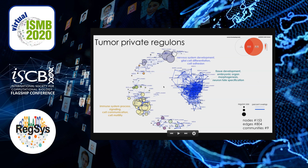We know these regulons work together because they are highly correlated at the activity level. However, they achieve their functions either by engaging similar downstream targets — reflected by high target overlap between nodes — or by engaging distinct downstream targets, reflected by thin edges showing lower target overlap.